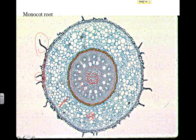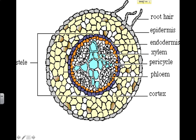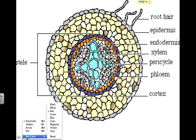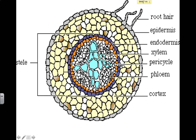Once again, xylem are the larger tubes and they're going to transport water up to the leaves. Phloem is going to transport sugar down to the roots. This next diagram is already labeled for you. Root hairs are going to increase surface area. The epidermis is going to be there for protection. The endodermis is just the outer layer of the vascular cylinder — it helps pump in nutrients to increase absorption for the roots.